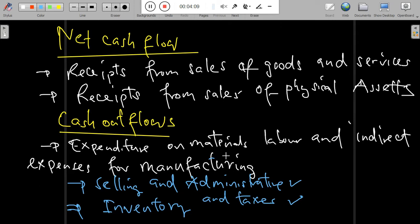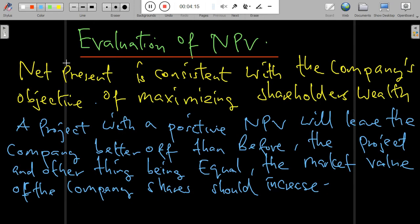How can we evaluate the net present value? The net present value method is consistent with a company's objective of maximizing shareholder wealth. A project with a positive net present value will leave the company better off than before the project, and all else being equal, the market value of the company's shares should increase.